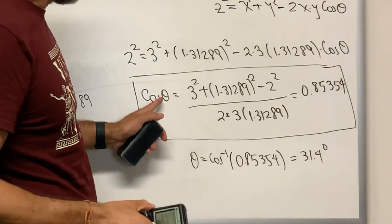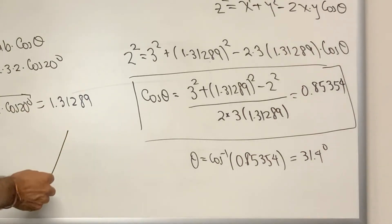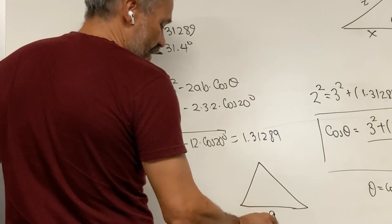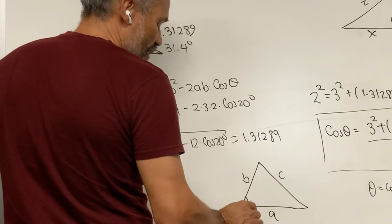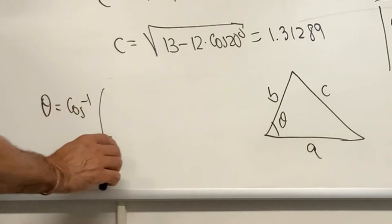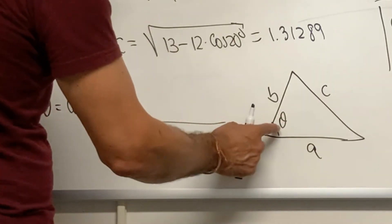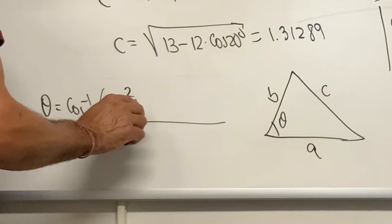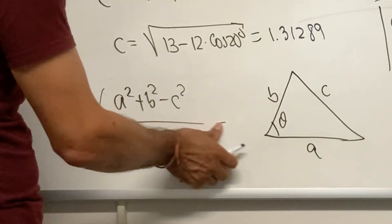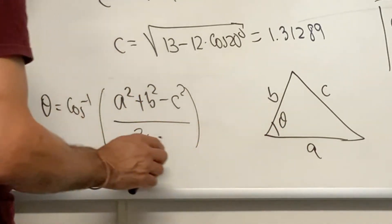An important observation: we can generalize this procedure for finding an angle. If we have three sides of a triangle — A, B, and C — and we want angle theta opposite side C, then theta equals cosine inverse of (A squared plus B squared minus C squared) divided by (2 times A times B). The numerator is the sum of squares of the two sides touching the angle, minus the square of the side opposite the angle.